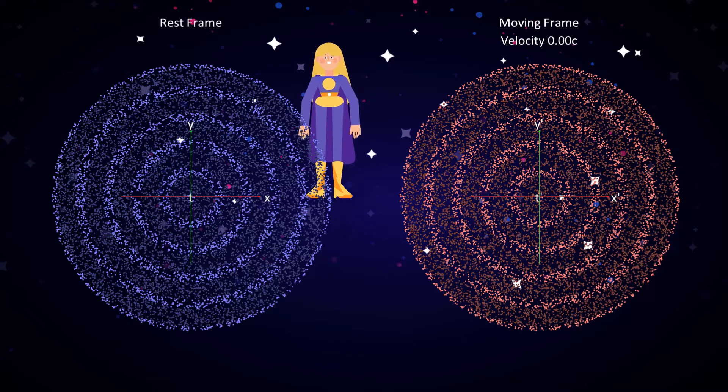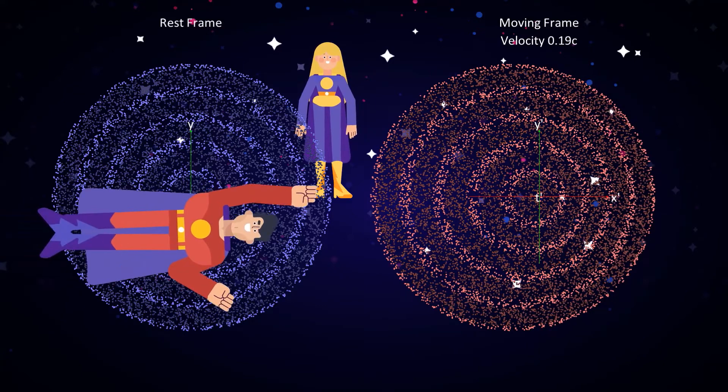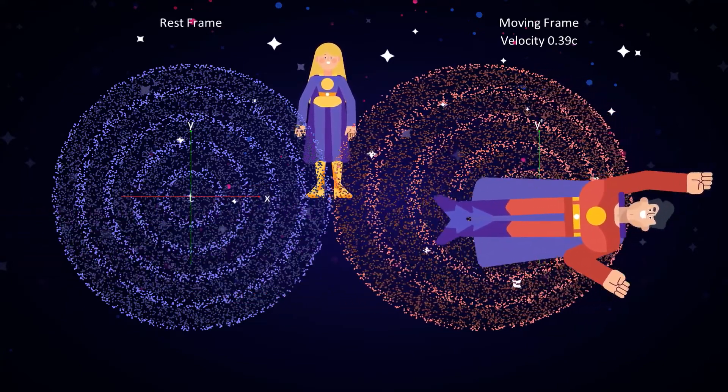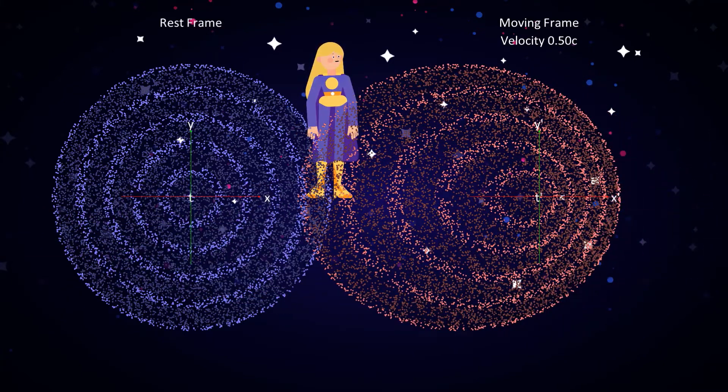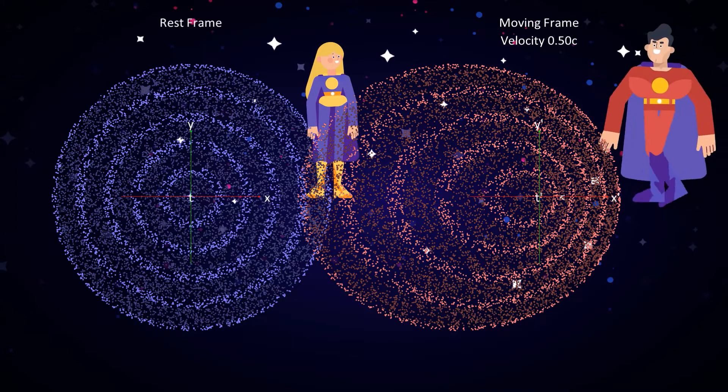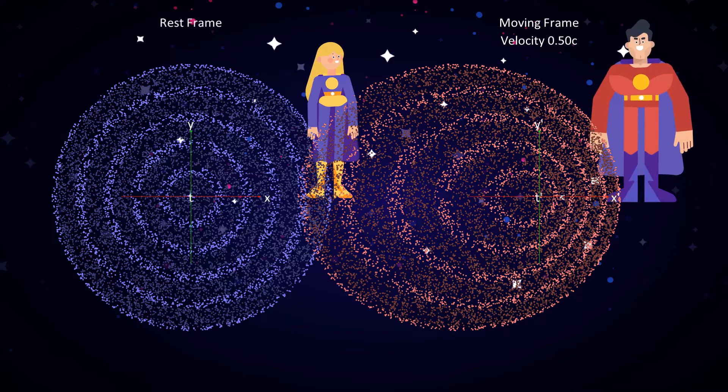Now superhero guy is building up speed to reach half the speed of light. It's very clear that as he does, the shape of the wave in the moving frame changes to show elliptical rings, just as the relativity deniers claim. But we're not quite done yet.